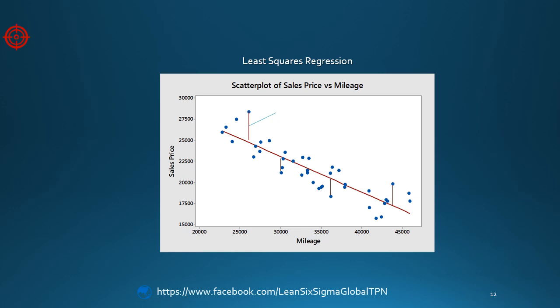The distances between the points and regression line are called residuals. They represent the portion of the response that is not explained by the regression equation.